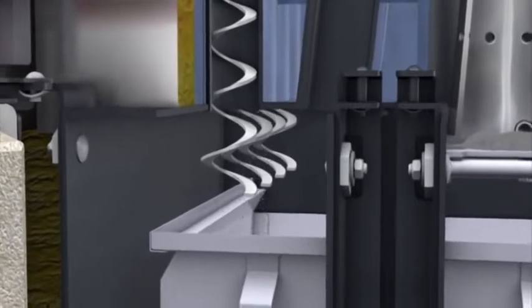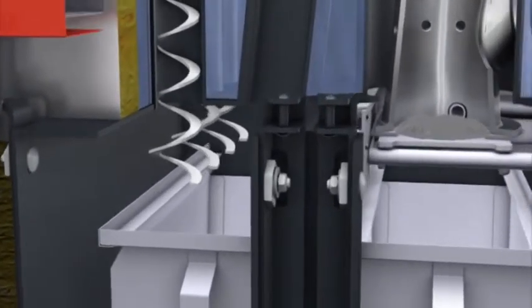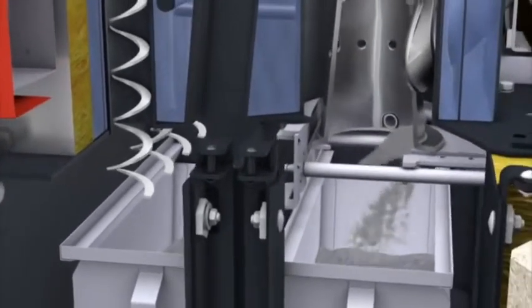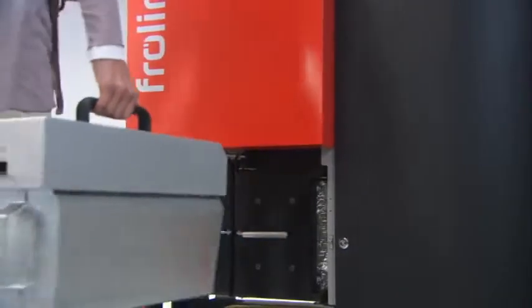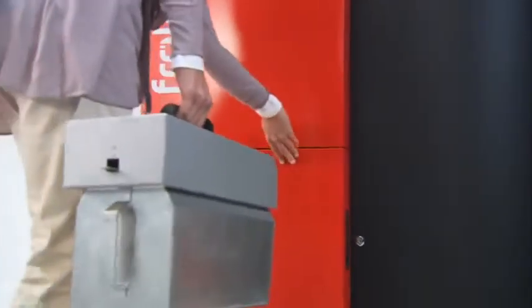The ash from the steel combustion chamber falls through an automatic sliding grate into large and easy-to-access ash drawers. These collection bins are closed with a lid and require infrequent, easy emptying.